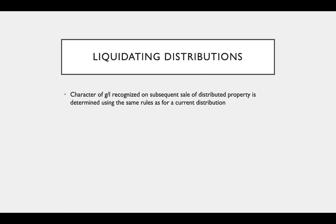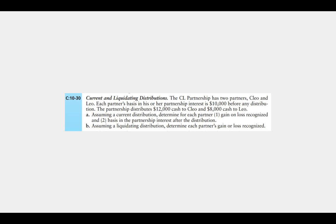In Problem 30, the CL Partnership has two partners, Clio and Leo. Each partner's basis in his or her partnership interest is ten thousand dollars before any distribution. The partnership distributes twelve thousand dollars cash to Clio and eight thousand dollars to Leo. Part A assumes a current distribution and asks us to determine for each partner: one, the gain or loss recognized, and two, the basis in the partnership interest after the distribution.